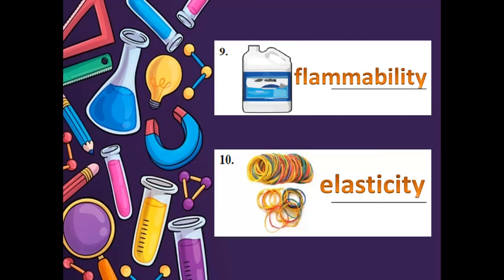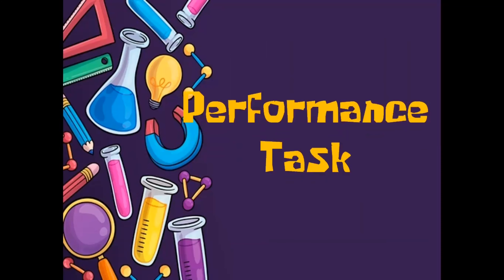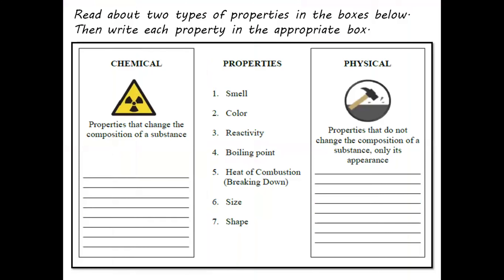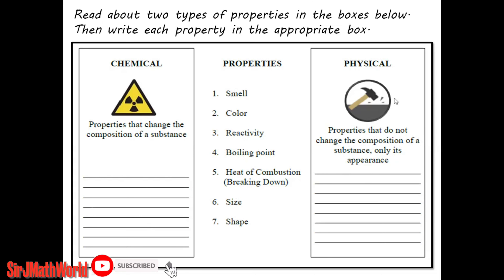So those are the different properties of materials. For your performance class, you have to read two types of properties in the boxes below, then write each property in the appropriate box. In the middle we have: smell, color, reactivity, boiling point, heat combustion, size, and shape. You have to group these properties — chemical properties that change the composition of a substance, or physical properties that do not change the composition of a substance, only its appearance.